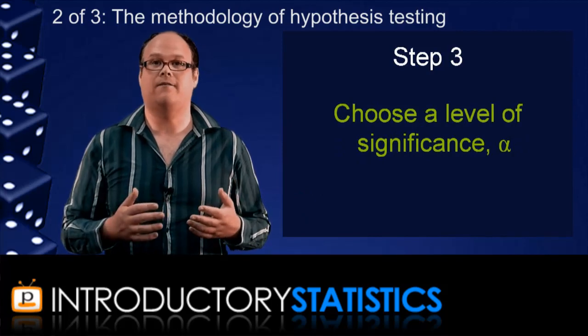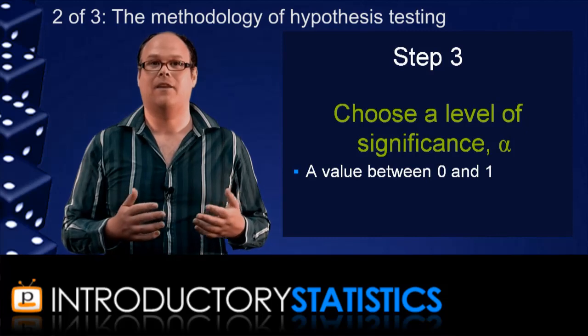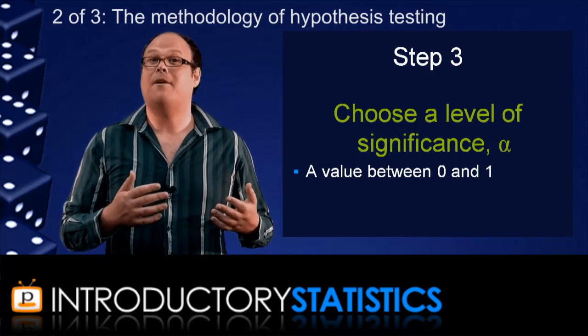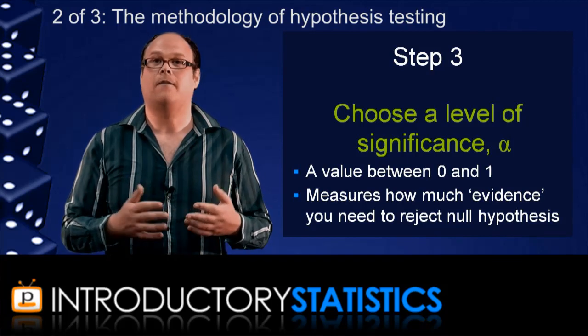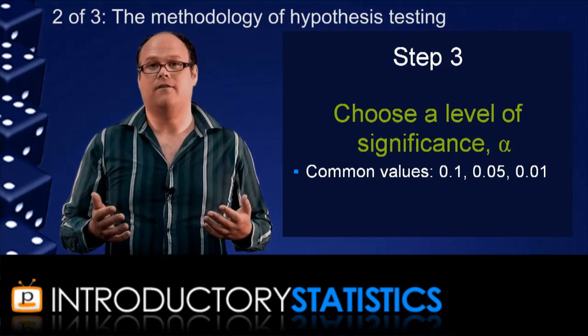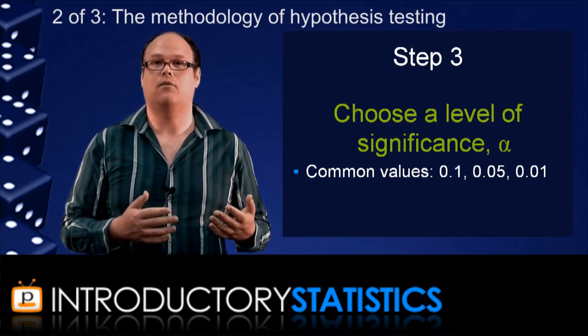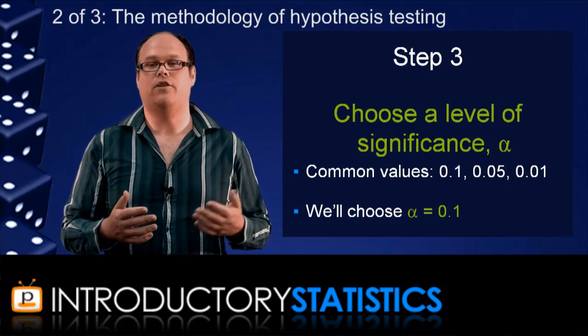This is a value between 0 and 1 and is denoted by alpha. Alpha is a measure of how much evidence you want before you agree to reject the null hypothesis. The lower the alpha, the more evidence you need. Some common levels of significance are 0.1, 0.05 and 0.01. Let's say in the basketball example we choose 0.1.